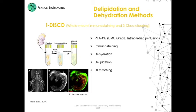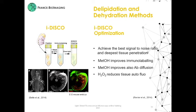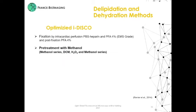René and collaborators proposed an optimization of iDISCO to improve the signal-to-noise ratio and to achieve deeper tissue penetration. To do so, they use methanol to improve immunolabelling and antibody diffusion. But be careful, sometimes methanol can be deleterious for your antibodies. This optimization also uses hydrogen peroxide to reduce tissue autofluorescence. Here you have the optimized protocol for iDISCO with a step of protein pretreatment with methanol.